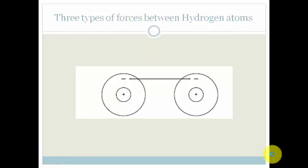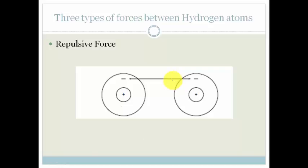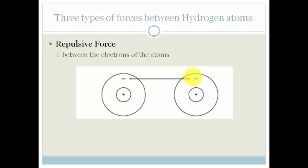If you look at this diagram, you will see that we've got two hydrogen atoms — one on this side and one on the other side. You can see that you've got a positive nucleus, and then you've got the orbital which has got a negative electron on each. The first type of force that occurs between the hydrogen atoms is actually a repulsive force, and that is between the electrons in the atoms — the electron in this orbital will repel the electron in that orbital.